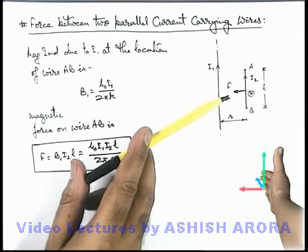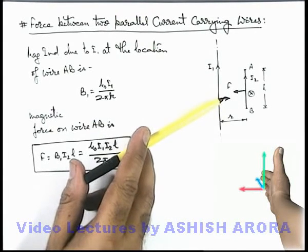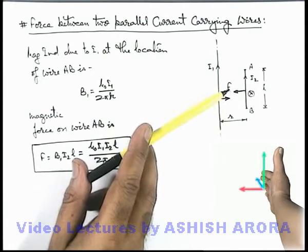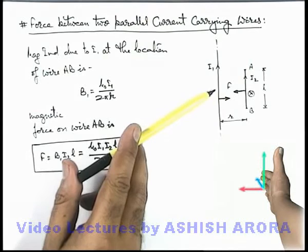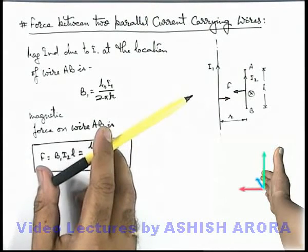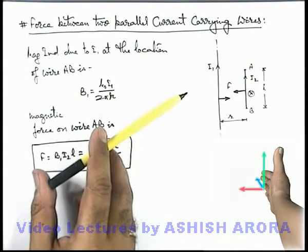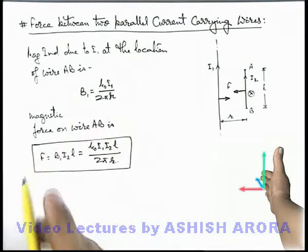Similarly, if the current in wire AB is reversed, you can see the force on wire AB will start acting toward the right. So on this wire carrying current i₁ will also be experiencing a force toward the left.